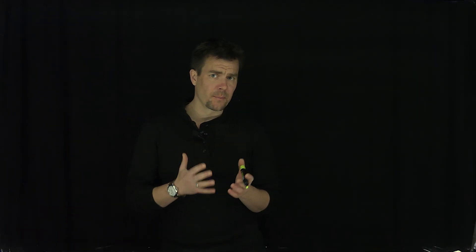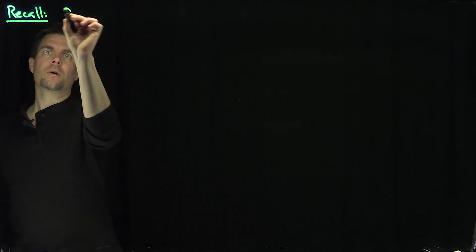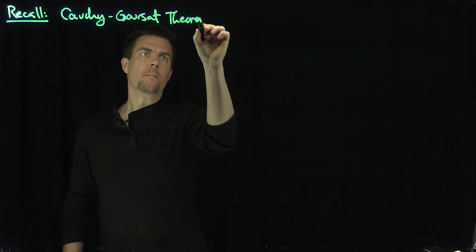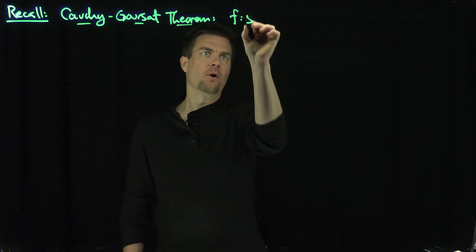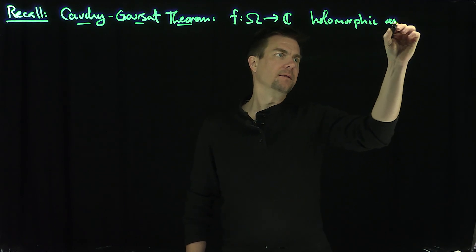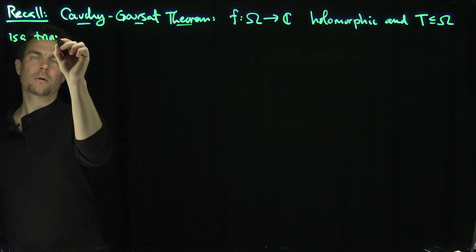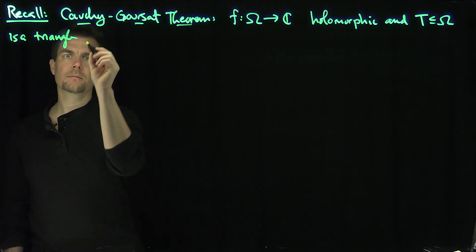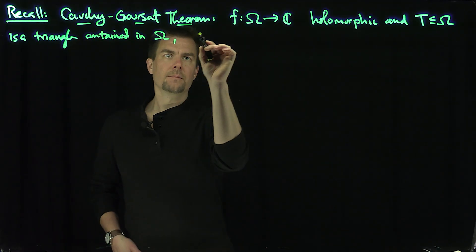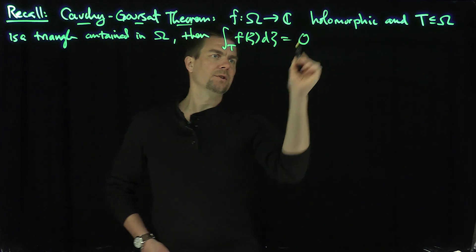Hello, students. In this video, we'll prove Morera's theorem, which is a converse to the Cauchy-Goursat theorem. So let's recall that Cauchy-Goursat tells us: if f maps omega into C is holomorphic, and T, a subset of omega, is a triangle contained in omega, then the integral over that triangle of f(ζ) dζ is equal to zero. That's the Cauchy-Goursat theorem — we already proved that.